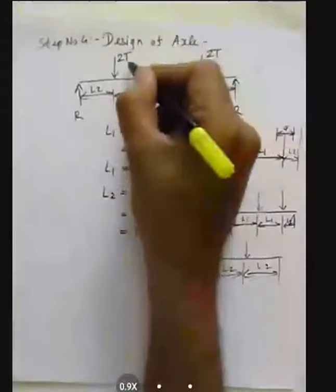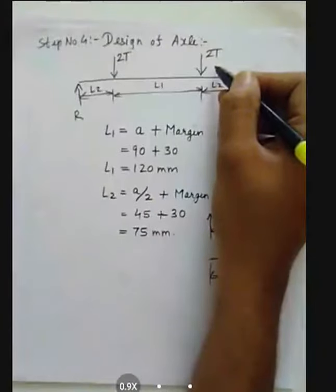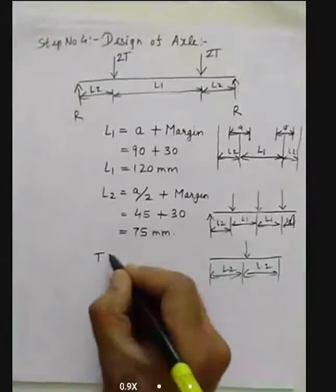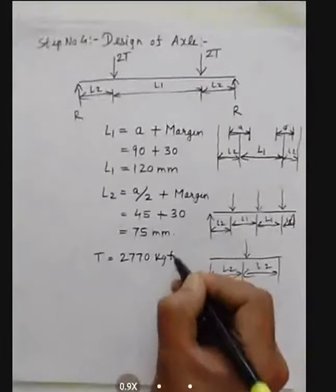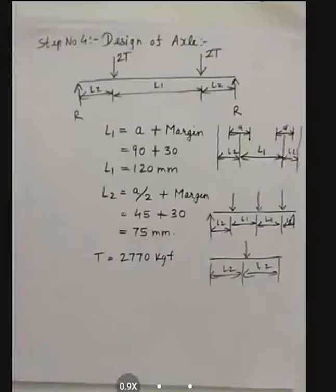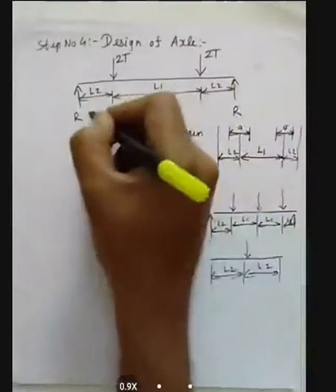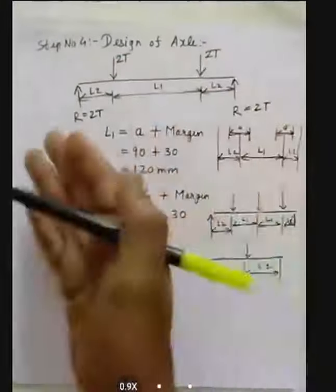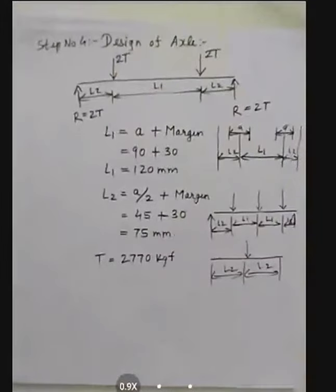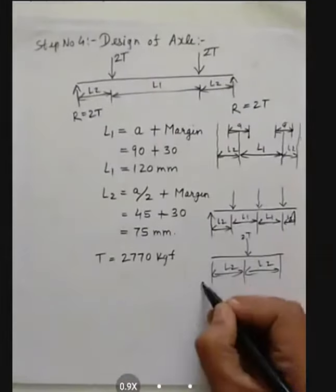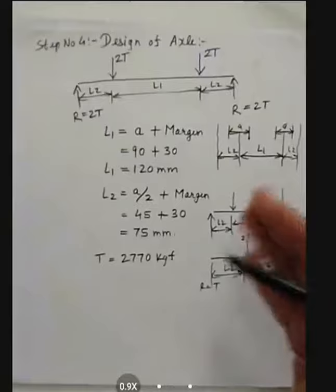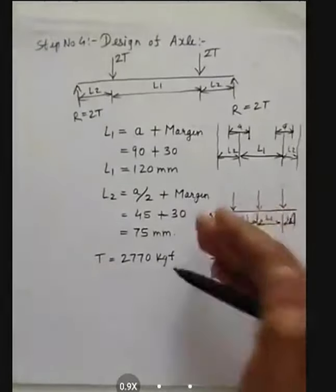The arrangement is now set with forces and reactions. The force at each pulley position is 2T = 2 × 27,770 kgf (converted to Newtons). Since there are two equal forces and two symmetric reaction points, each reaction equals 2T. For a single pulley the reactions would each be T. For three or more pulleys, use summation of Fy = 0 and summation of moments = 0 to find reactions.